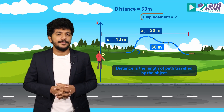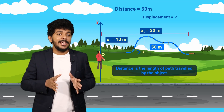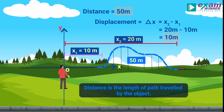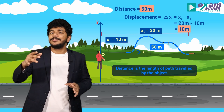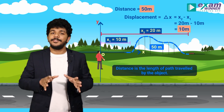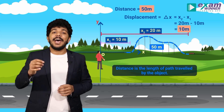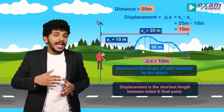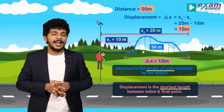What is the displacement here? Displacement is the change in position. Delta x equals x2 minus x1, which is 20 minus 10, equal to 10 meters. So displacement is 10 meters, but distance is 50 meters. Distance is the length actually traveled by the object.